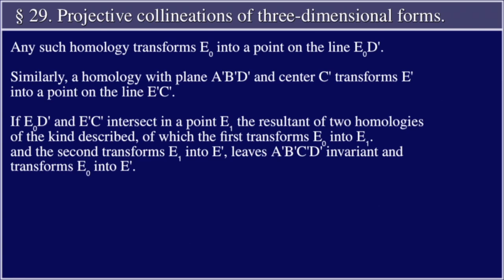Any such homology transforms E0 into a point on the line E0 D prime. Similarly, a homology with plane A prime, B prime, D prime and center C prime transforms E prime into a point on the line E prime C prime. If E0 D prime and E prime C prime intersect in a point E1, the resultant of two homologies of the kind described, of which the first transforms E0 into E1 and the second transforms E1 into E prime, leaves A prime, B prime, C prime, D prime invariant and transforms E0 into E prime.